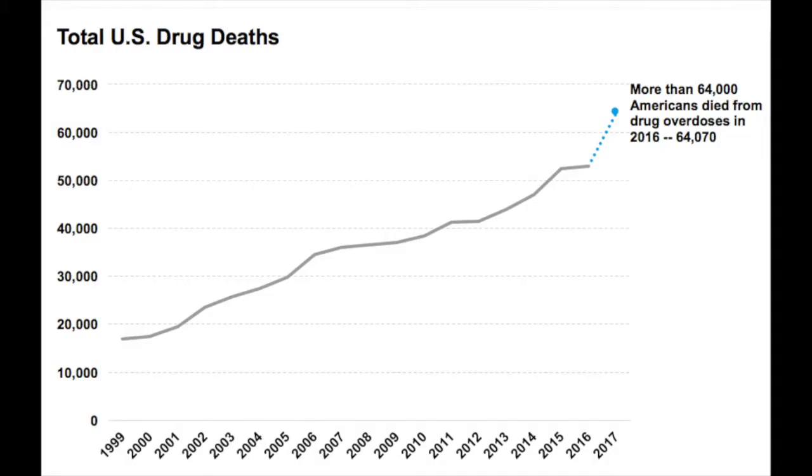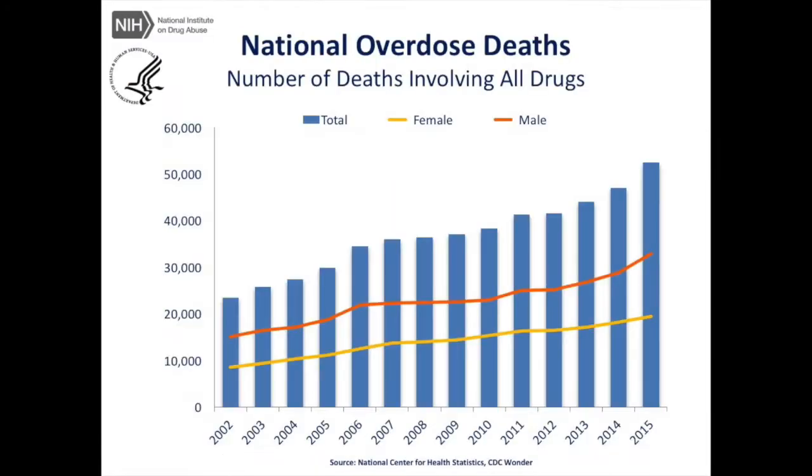Here is how the United States drug deaths have increased since the year 2000. Here is a chart showing national overdose deaths and the number of deaths involving all drugs. The orange line represents males and the yellow line represents females. The blue bars represent the total number of deaths for both men and women for the given year.